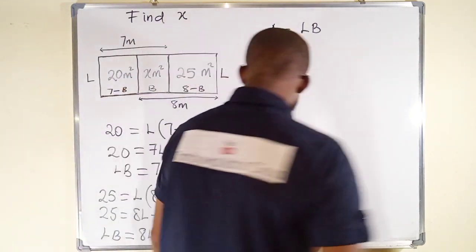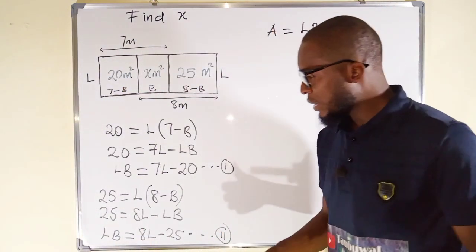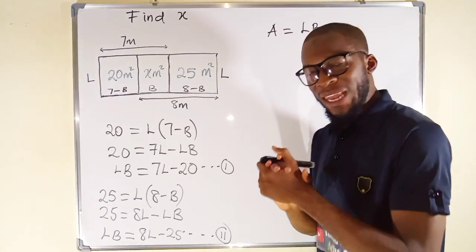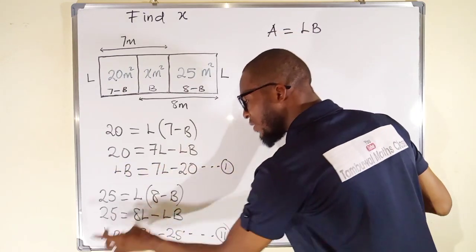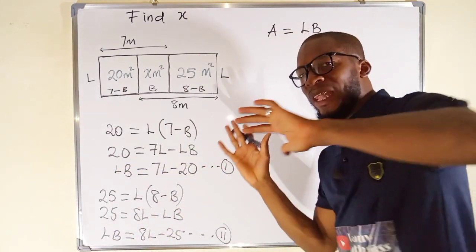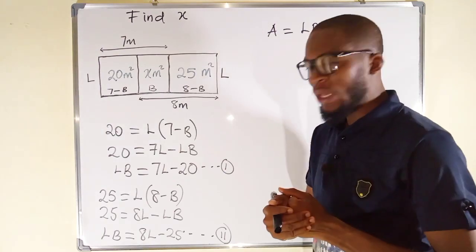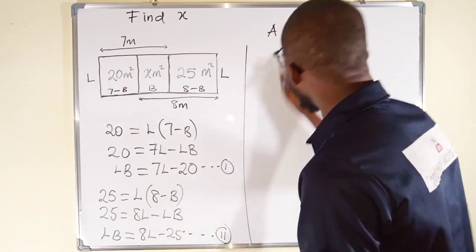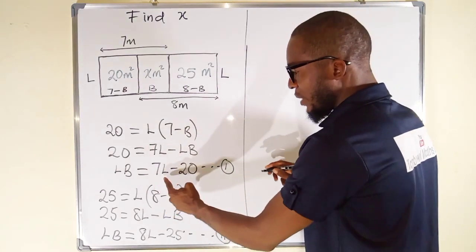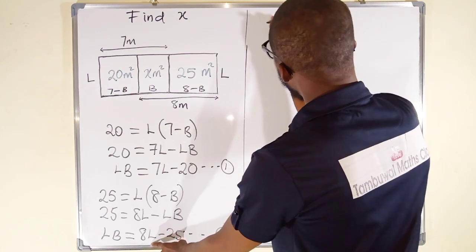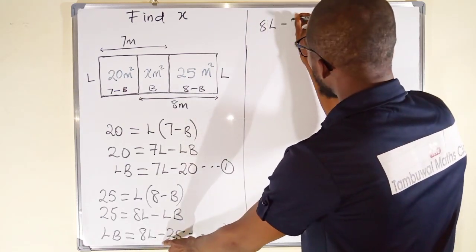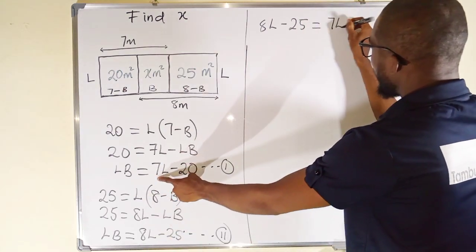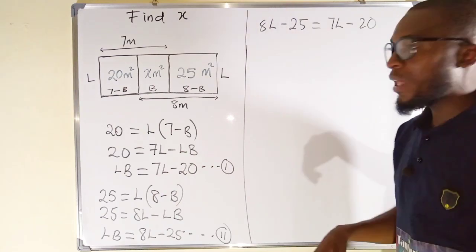Now, relate equation 1 and equation 2. Observe something here. Equation 1 and equation 2 are all expressed in terms of LB. From equation 1, LB equal to this. Equation 2, LB is equal to this. Their left hand side are exactly the same. Definitely, their right hand side must be the same. So, I can say their right hand side, I can equate them together. On the right hand side, we have from equation 2, we have 8L minus 25. And this must be equal to the other one which is 7L minus 20. So, I can solve for L here.